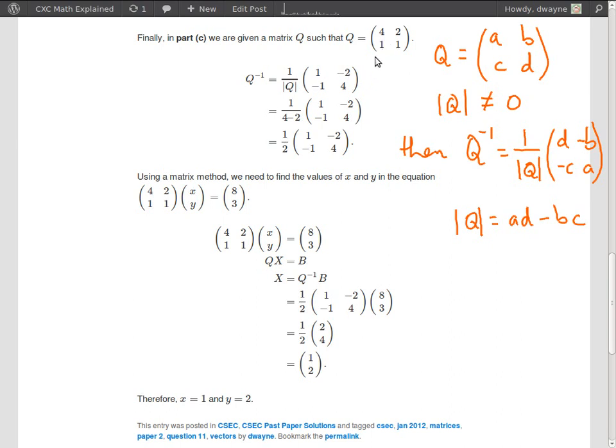I plugged A was 4 so 4 goes here. This is the A, this is the D, this is minus B, this is negative B, negative C. And determinant of Q is A times D which is 4 times 1, 4 and B times C which is 2 times 1, 2. So that's 4 minus 2. So that's why I got the 4 minus 2 here and that brings down to 2.